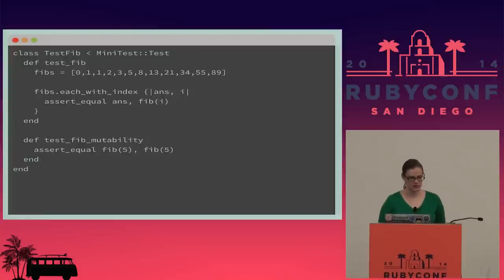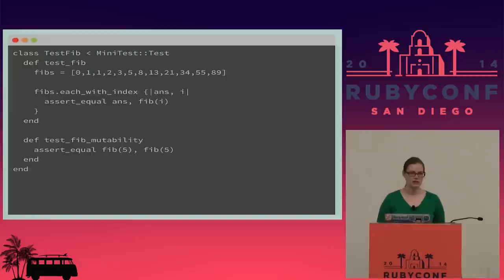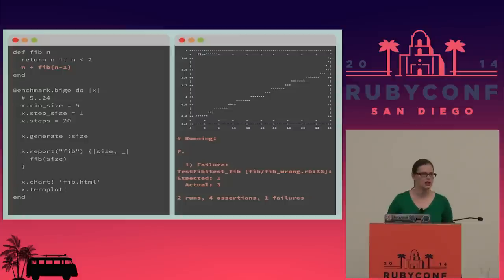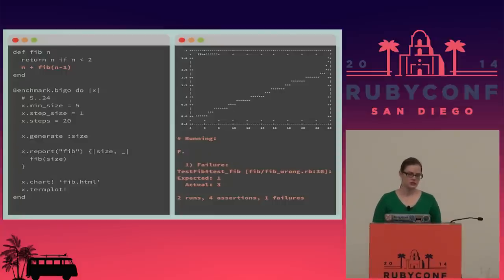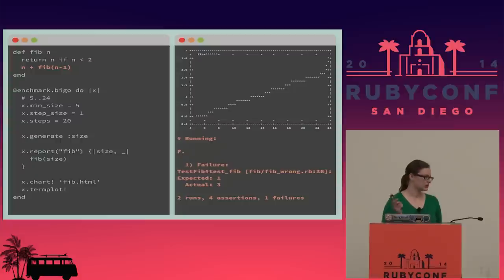I also want to make sure this method doesn't change its behavior across multiple calls. For both IPS and big-O, it's calling the same block over and over again — it would be bad if your implementation returned different values each time. So I call `fib(5)` twice and verify those two things are equal. While researching the Fibonacci sequence, I completely screwed up the `fib` method — instead of writing the correct Fibonacci, I returned `n + fib(n - 1)`. The benchmark doesn't care — it runs perfectly fine and produces a nice-looking linear chart.